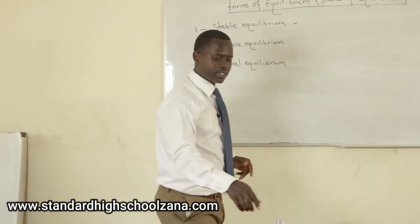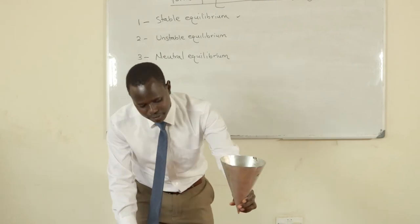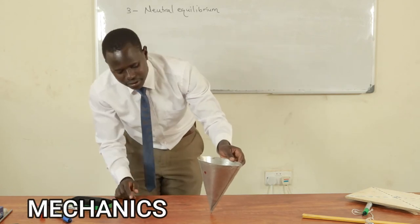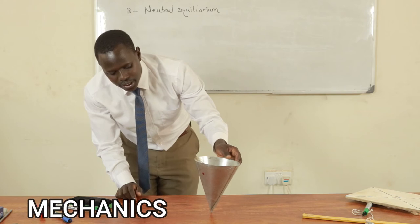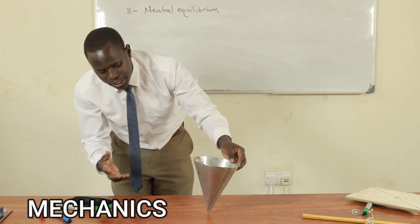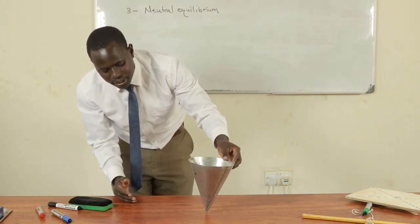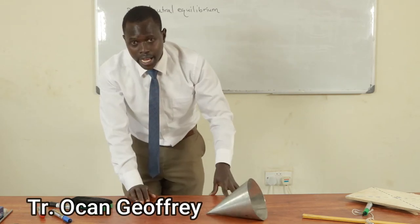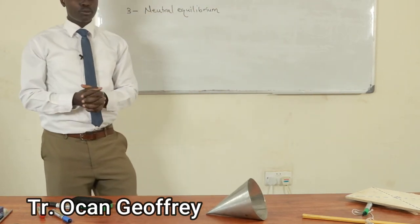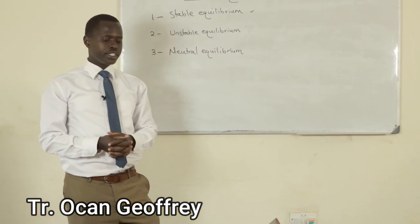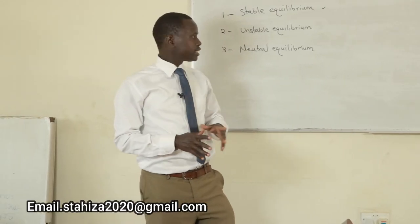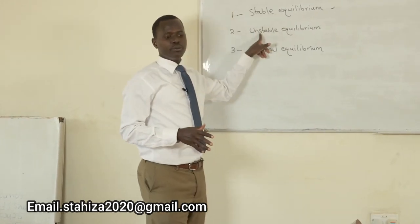What about unstable equilibrium? When the cone is placed upside down, the center of gravity has already been raised. If you leave it, it will fall down immediately. If you give a slight displacement to further raise the center of gravity, the object will topple and fall down to lower the center of gravity. That state is called unstable equilibrium.